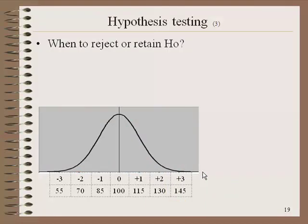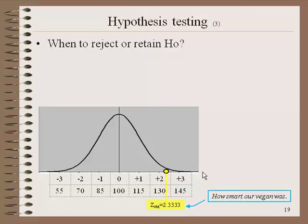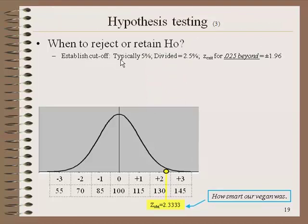We have a Z-score of 2.33, and what we do is establish a cutoff. Typically we say if there's only a 5% chance of being wrong, we'll go ahead and reject the null hypothesis. We take that 5% and divide it in 2, giving 2.5%, because we want to check for extreme scores on both the high end and the negative end. We'll establish a Z-critical for a proportion of area equal to 0.025 of the curve. If you go to your Z-score table and look up the area beyond 0.025, you will find a Z-score of 1.96.